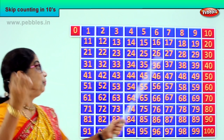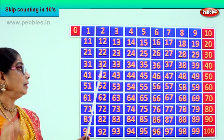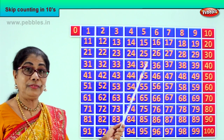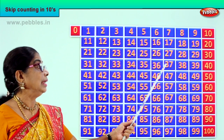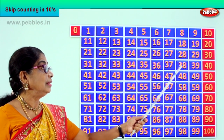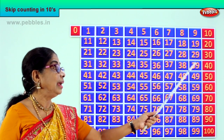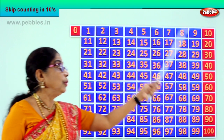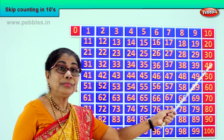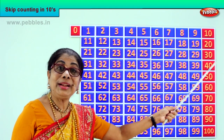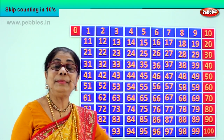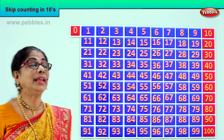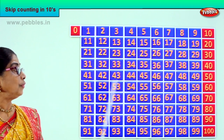Next. After thirty: thirty-one, thirty-two, thirty-three, thirty-four, thirty-five, thirty-six, thirty-seven, thirty-eight, thirty-nine. So thirty-one to forty — here we make another leap.